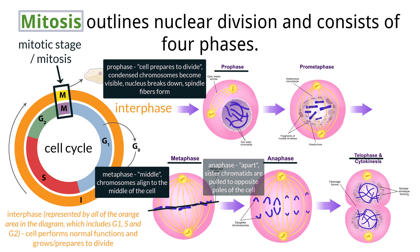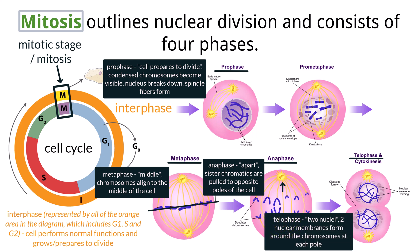During anaphase — think apart — the chromatids have separated into chromosomes. They move to the opposite poles of the cell by motor proteins pushing the microtubules in opposite directions. At the end of anaphase, each pole has the chromosomes needed for a new cell. Telophase is the last phase — think two nuclei — and finds a set of chromosomes at each pole. The nuclear membrane begins to reform around each set of chromosomes and the nucleolus reappears. The spindle apparatus is gone and the cell elongates, getting ready to undergo cytokinesis.